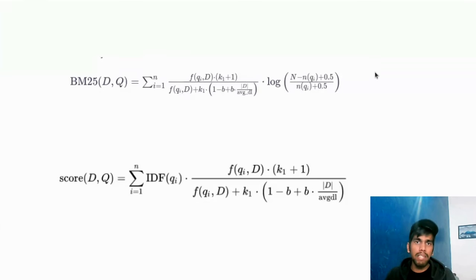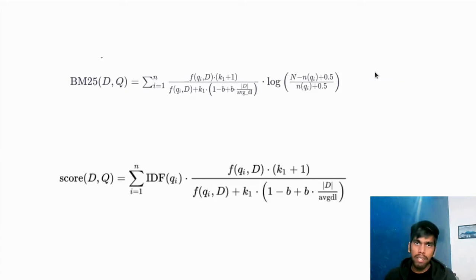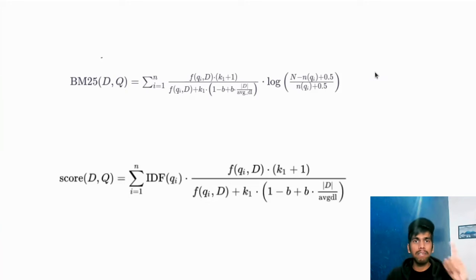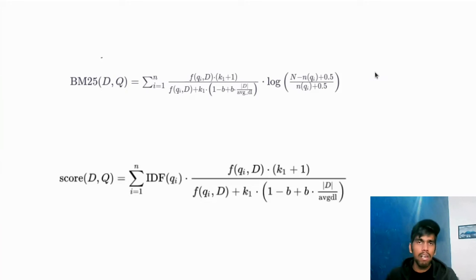In our previous video, we discussed topics such as parent document retriever, cohere re-ranking, and LangChain expression language. In this video, we will try to implement an ensemble retriever that combines our keyword retriever and vector search retriever.